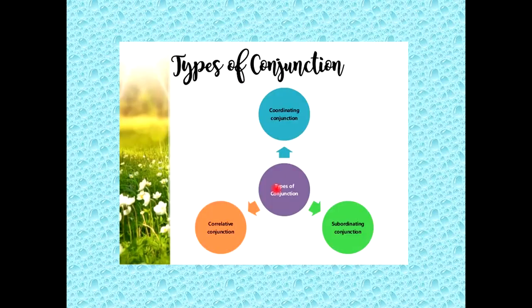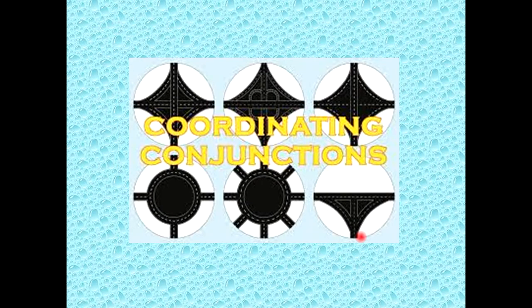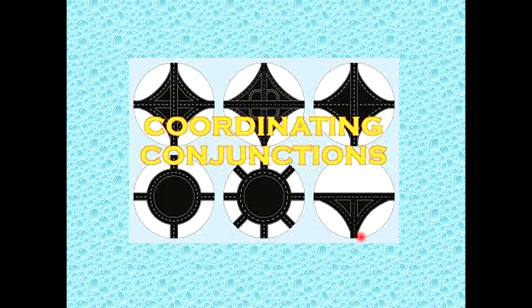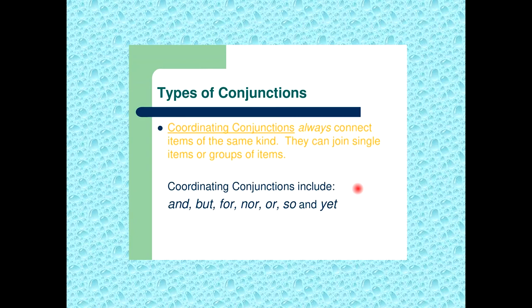There are types of conjunctions. Coordinating conjunctions are one type. There are also correlative conjunctions and subordinating conjunctions. So let's discuss coordinating conjunctions.